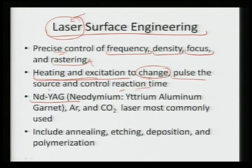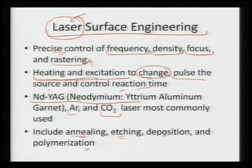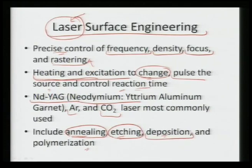Certain lasers that are very commonly used are neodymium YAG (yttrium aluminum garnet) laser, argon laser, and CO₂ laser. They can be used for annealing, etching, deposition, and polymerization. By etching, we can provide certain contours and geometries to the material. We can also deposit certain materials or chemicals on the surface of the substrate. We can also induce cross-linking or polymerization by utilizing lasers. Laser surface engineering has emerged as a wide tool in terms of precisely controlling frequency, density, focus, and rastering.